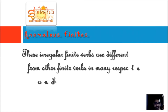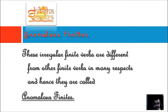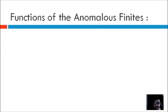Let's begin with some very interesting factors. These irregular finite verbs are very different from other finite verbs in many respects — hence they are called anomalous finites. In this presentation we are going to learn a lot about anomalous verbs, particularly the functions that they perform. Function is such a very important thing for any English grammar term, so you have to learn and remember them clearly so you can master English grammar.